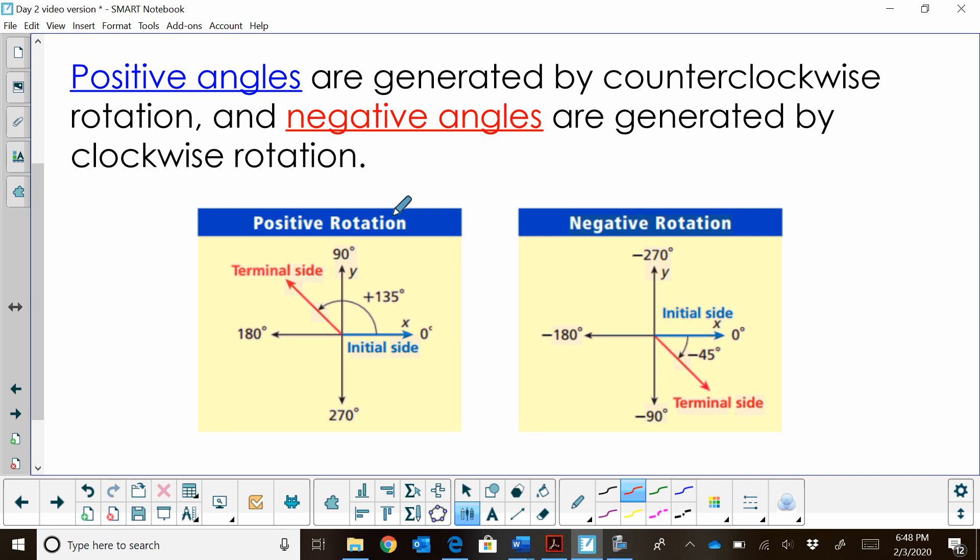And then positive angles go counterclockwise, and negative angles go clockwise. They start at this initial side and rotate. They end at the terminal side, starting at this initial side, rotating and ending at the terminal side. So I hope this video has been helpful for you to understand positive and negative rotations of angles and what quadrants they fall in.